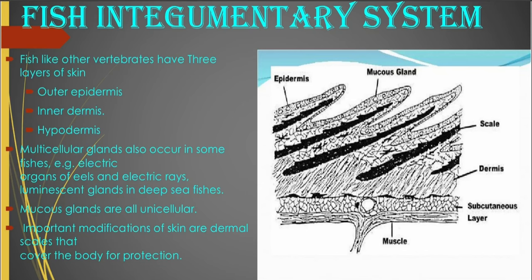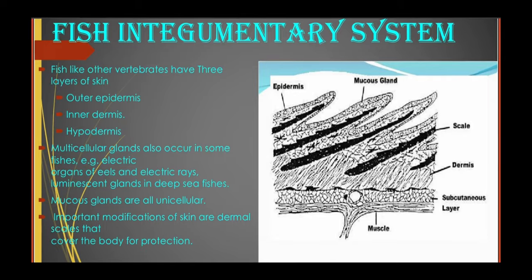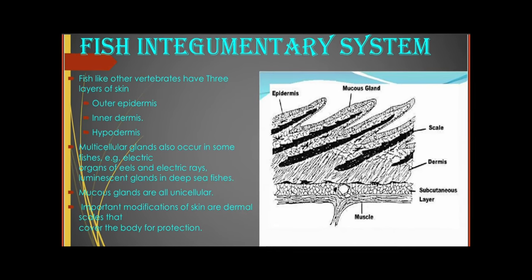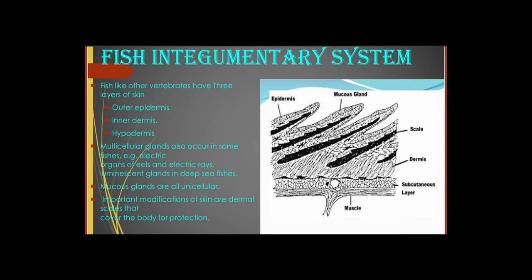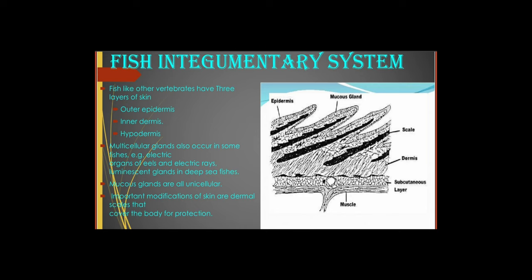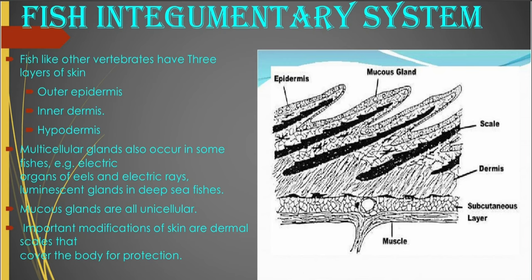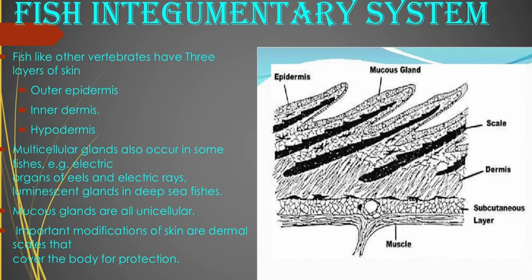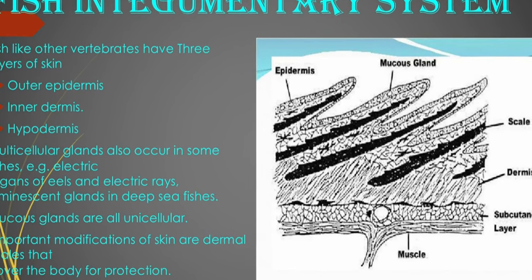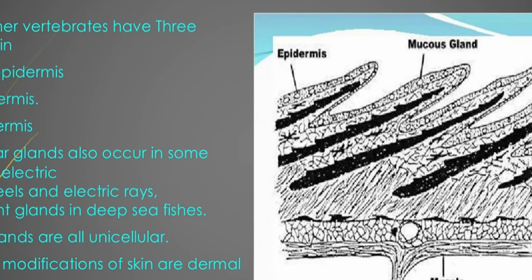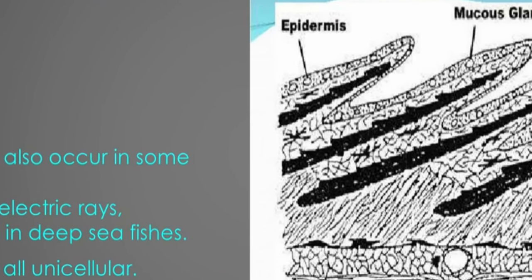I'm taking a look at the fish integumentary system. The skin of the fish has the following layers: the outer layer of the epidermis, the inner layer of the dermis, and the deepest layer is the hypodermis. You also have multicellular glands, which you find in some fishes like the electric organs and the electric rays.